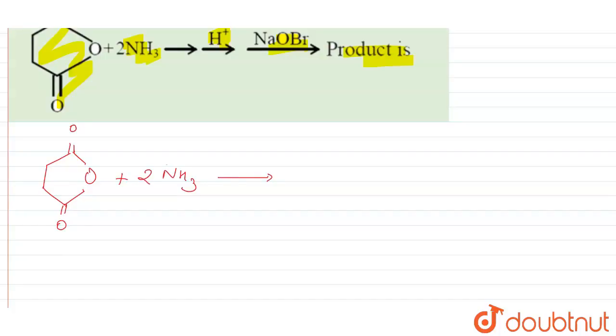Nitrogen has a pair of lone pair which will attack this carbon atom, so attack is going to happen at this position, which will make this charge go up and then the bond will shift again, which will help in the breaking of this bond.